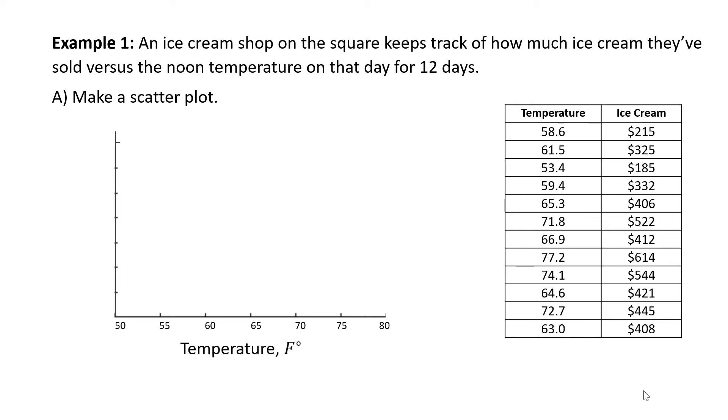We also need to mark the vertical axis. That is going to correspond to the ice cream sales. We have the lowest sale recorded as $185 and the highest is $614. Let's mark these in $100 intervals starting at 100, so we'll have 100, 200, 300, 400, 500, 600, and $700, and we will label the vertical axis sales.